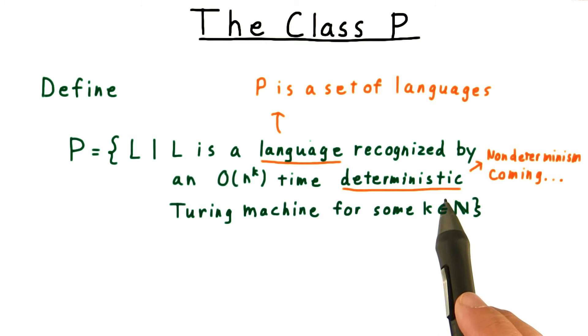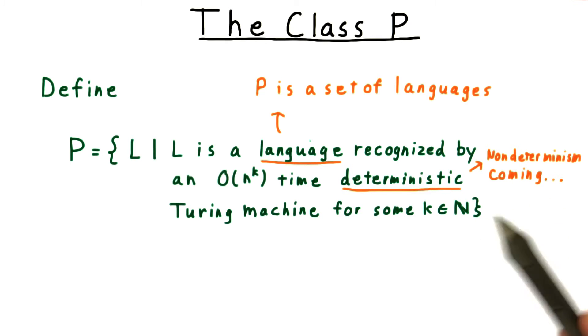A second point is the word deterministic. We haven't seen a non-deterministic Turing machine yet, but one is coming. Deterministic just means that given a current state and tape symbol being read, there's only one transition for the machine to follow.